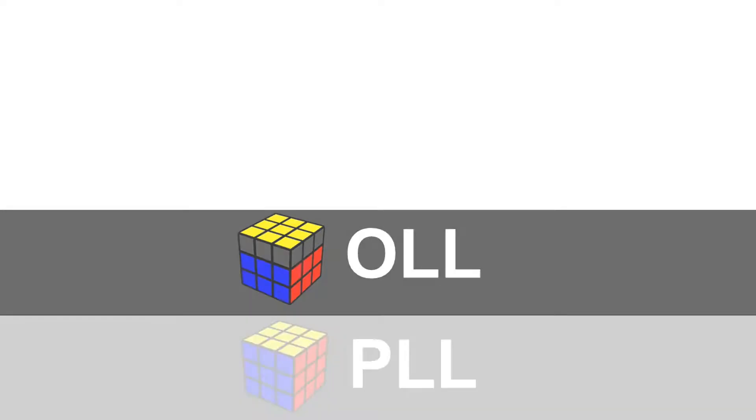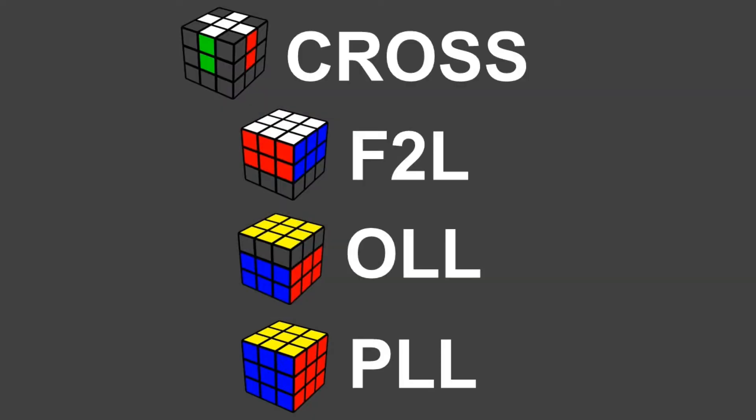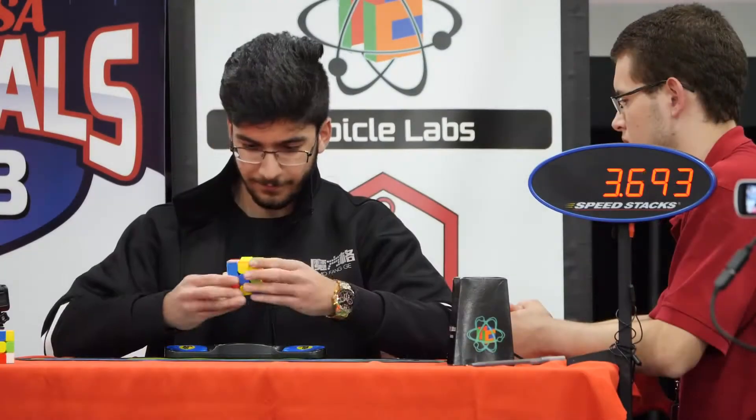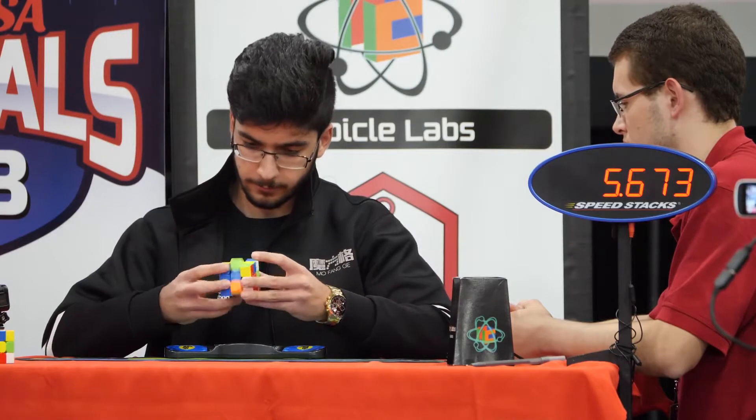CFOP stands for Cross, F2L, OLL, PLL. The CFOP method, sometimes known as the Fridrich method, is one of the most commonly used methods in speed solving a 3x3x3 Rubik's Cube.